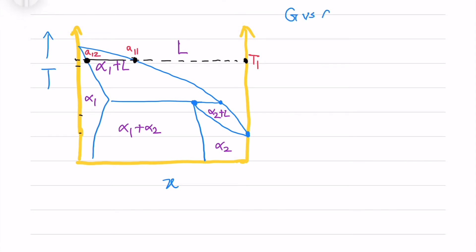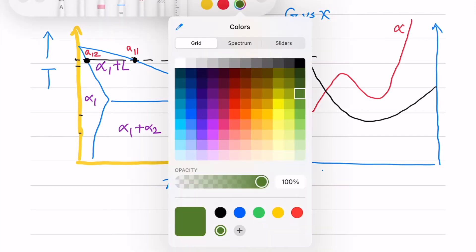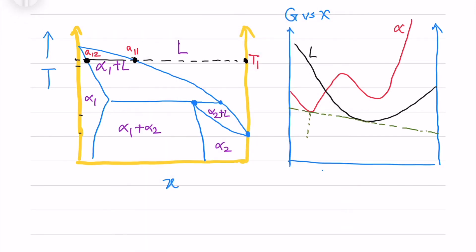For temperature T1, I have two compositions A1 and A2 where I see transitions. You can see there are two local minimums for alpha and one local minimum for liquid, and I now draw a common tangent between liquid and alpha. This is the first G-X curve.